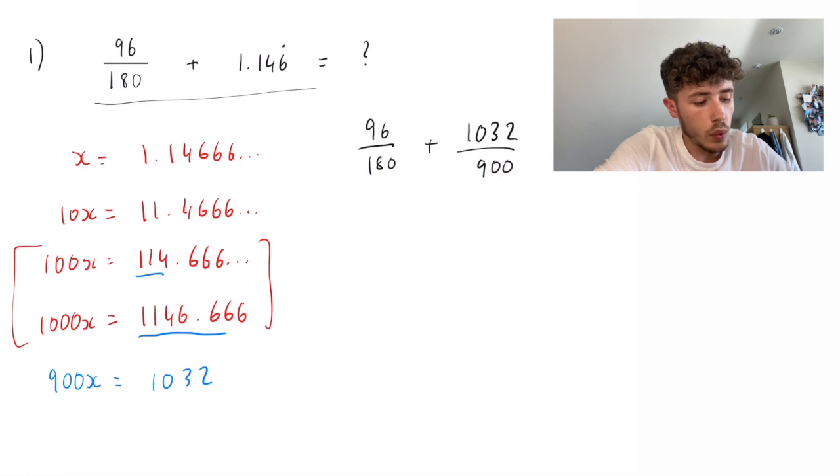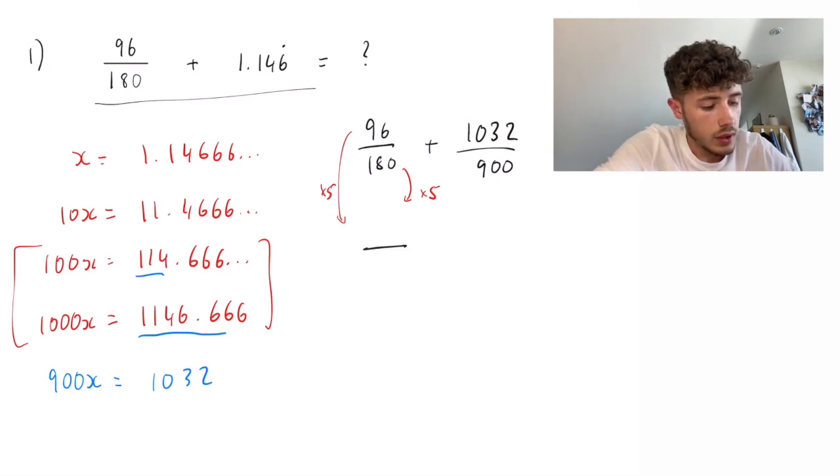So, if we multiply the 180 by 5, we can get that to 900, which means we're also going to have to multiply the top by 5. So, on the bottom, we're now going to have two 900s.